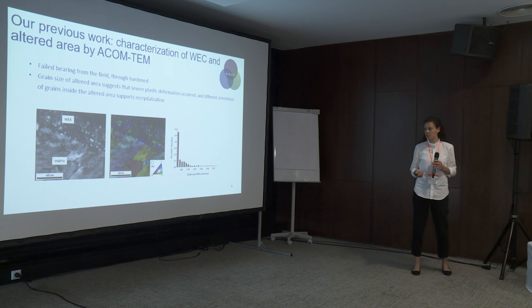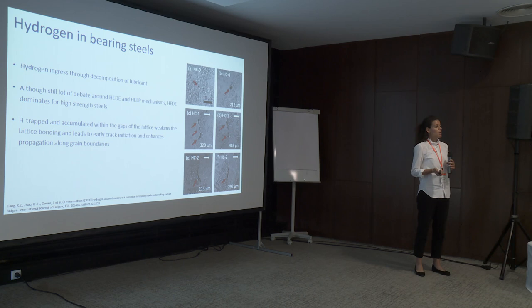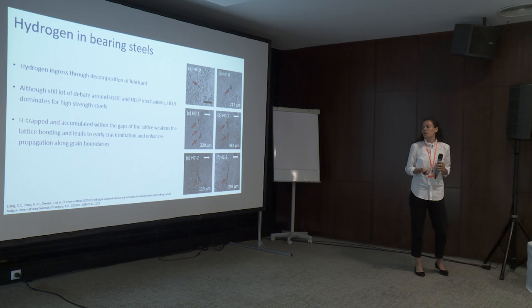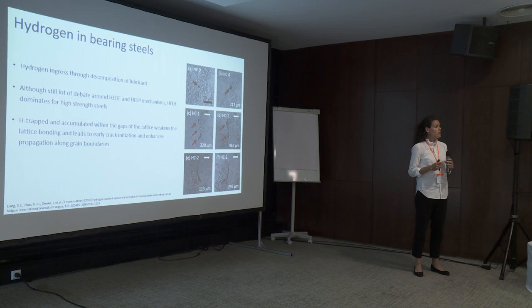Now I would like to present the role of hydrogen. Hydrogen ingress in bearings can occur from the composition of the lubricant, electrical current, or the steelmaking process. In the literature, it is stated that hydrogen accumulates at the boundary between bulk material and inclusions, which decreases the cohesive strength and therefore causes cracks to initiate earlier.